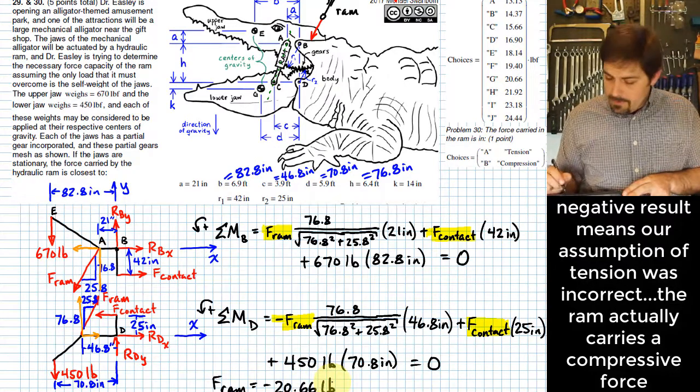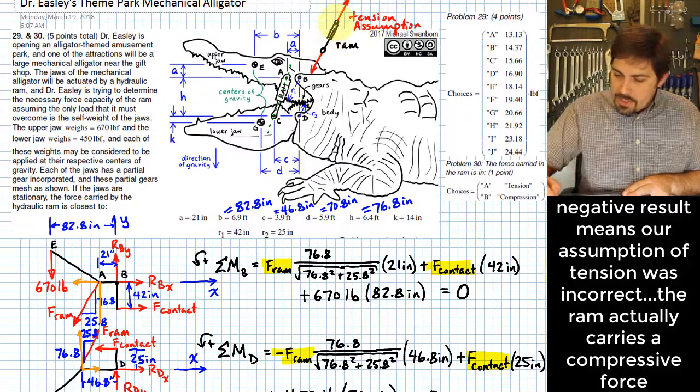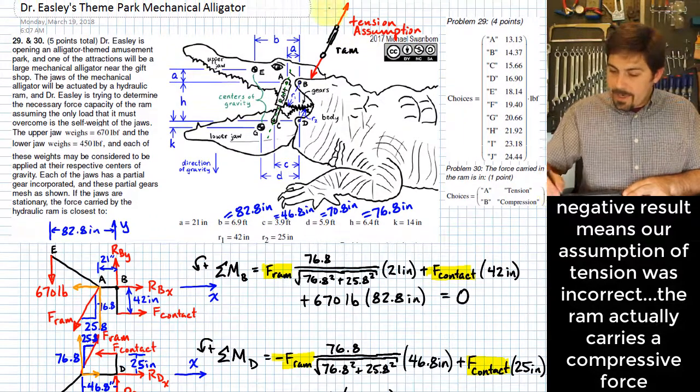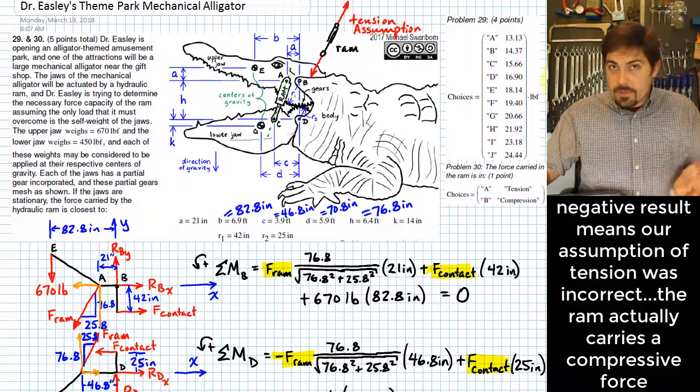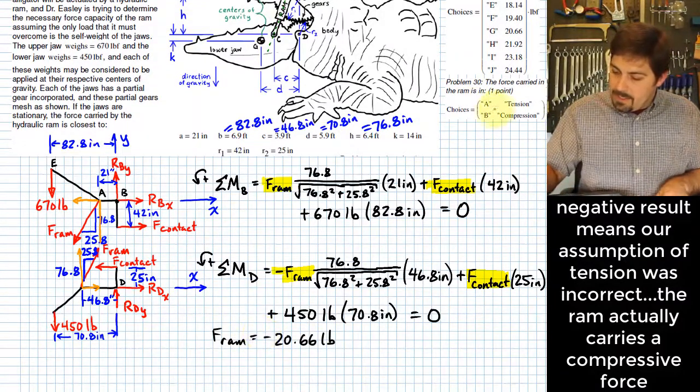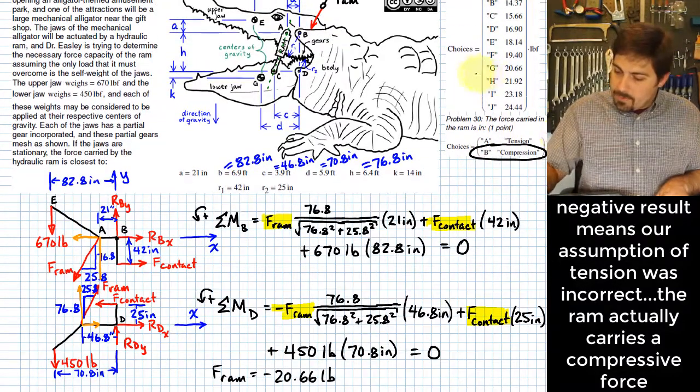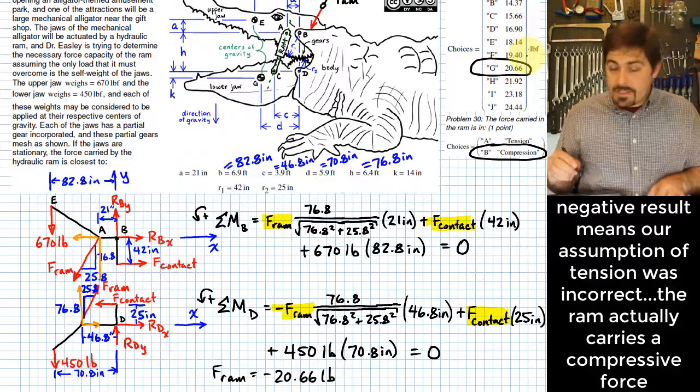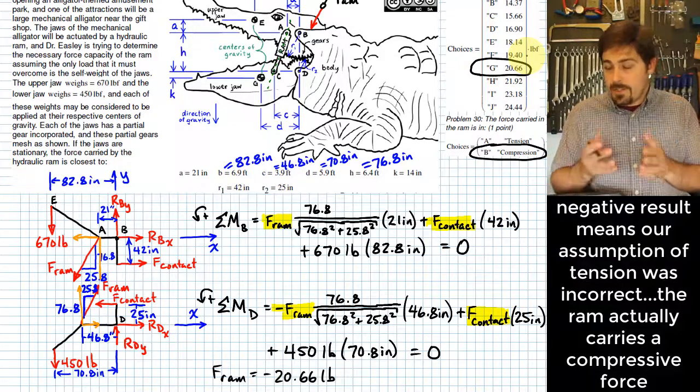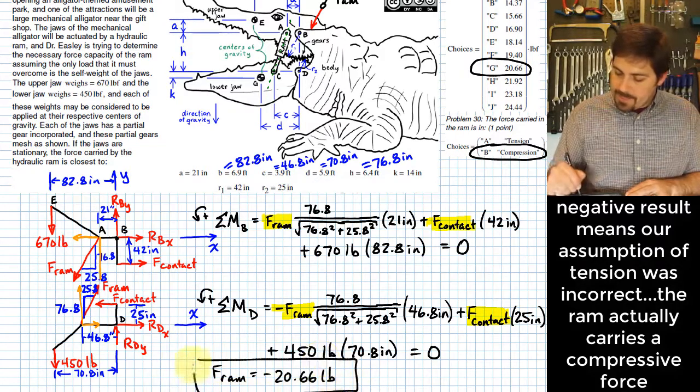What does the negative mean? Well, the negative means that up here where we had assumed tension in that member, that assumption was actually incorrect, and it is time for us to interpret that. So the negative sign means that was incorrect. It means that the RAM carries a compressive force, and that compressive force is going to be 20.66 pounds. So we assumed tension, came up with a negative answer, and that tells us it must have been in compression. And that actually solves the problem that was asked.